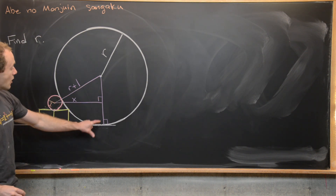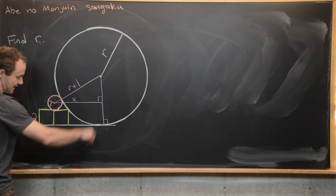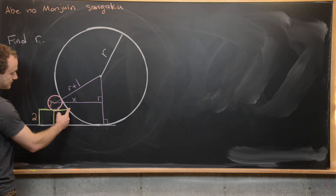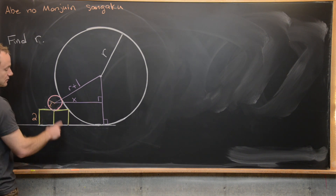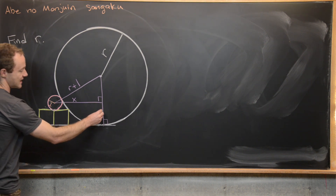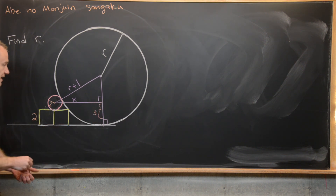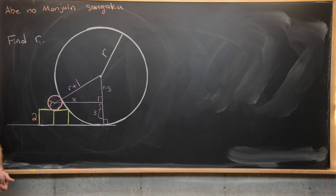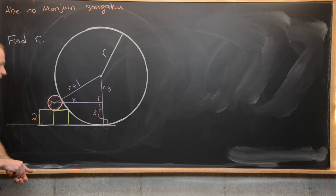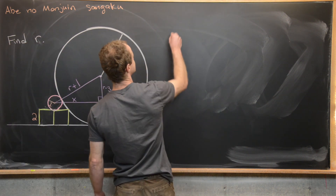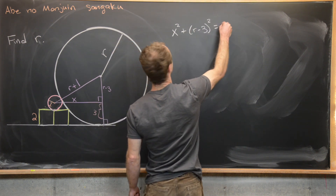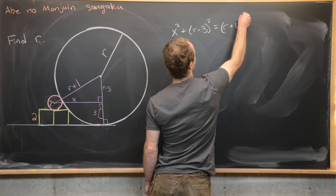This vertical distance spans the length of the square and the pink circle, so that length is 2 plus 1, or 3, making the remaining vertical leg R minus 3. Now we can write the Pythagorean theorem: x² + (R − 3)² = (R + 1)².